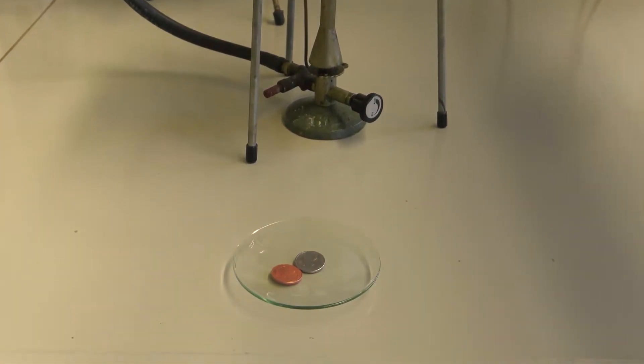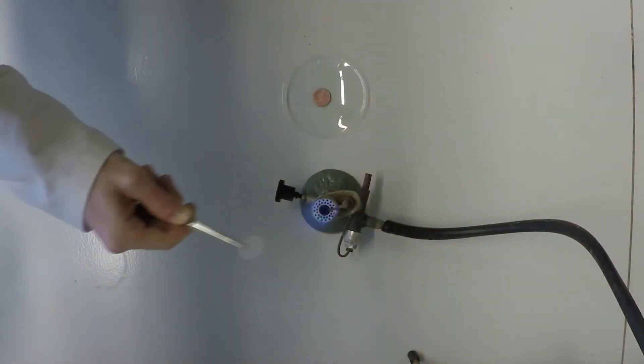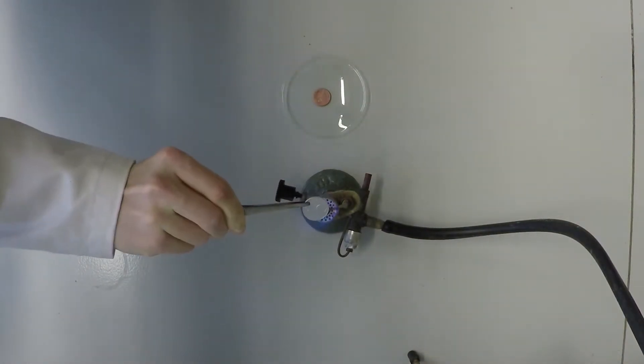The result is a silver coin. Heat the silvery coin in the flame of the Bunsen burner. The color changes from silver to gold.